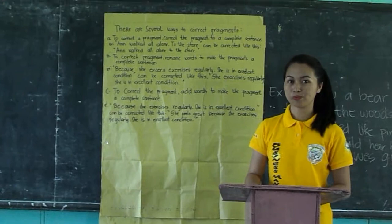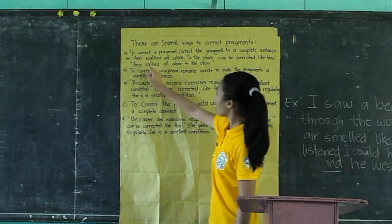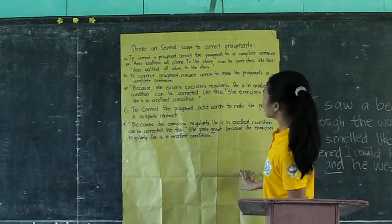There are several ways to correct fragments. Letter A: correct the fragment into a complete sentence. Example: 'I walk all alone to the store' can be corrected like this — 'I walk all alone to the store.'